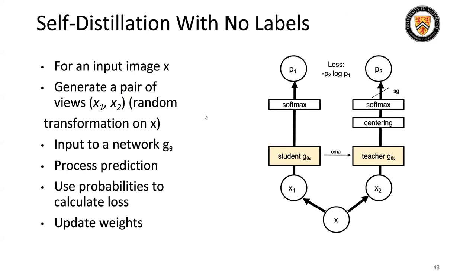Self-distillation with no labels — what is it? Imagine an input image X. We're going to generate a pair of views, X1 and X2. These are some random transformations: imagine we rotate the image, crop it, blur it, things of that nature.